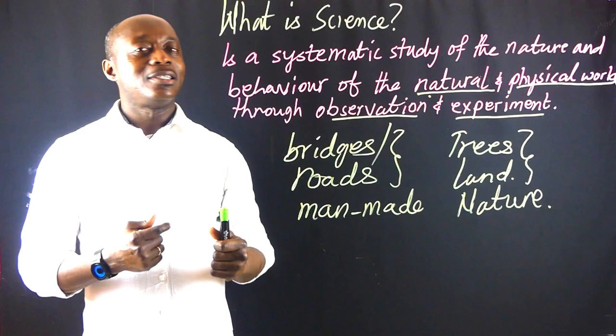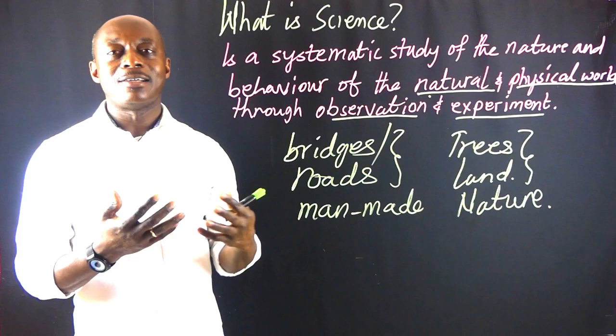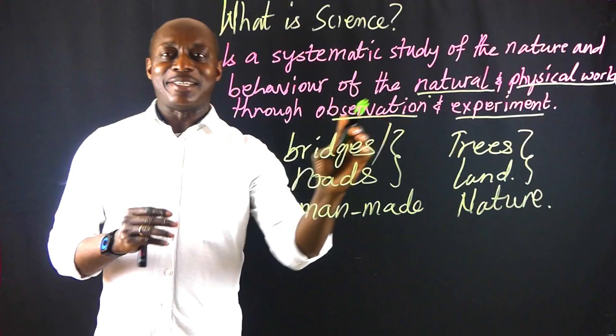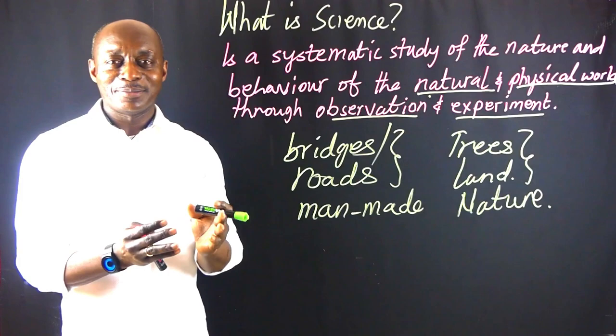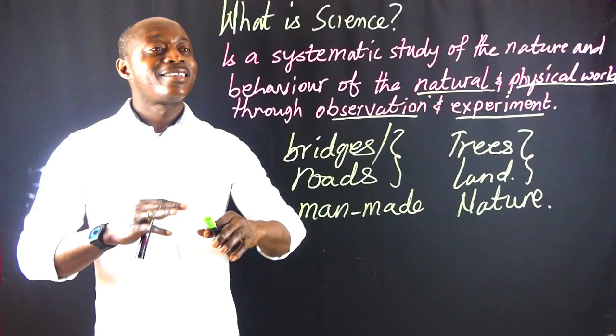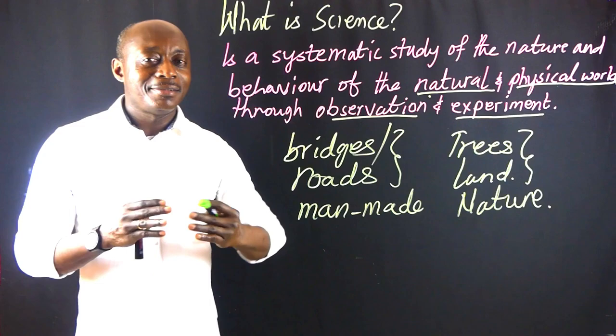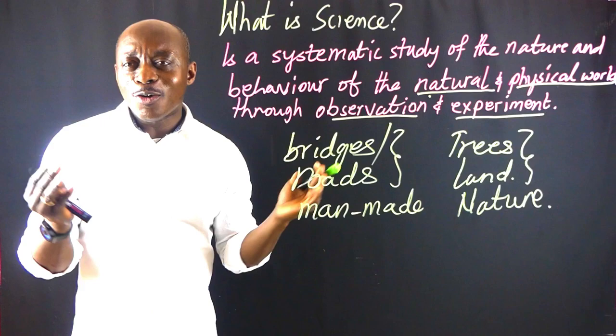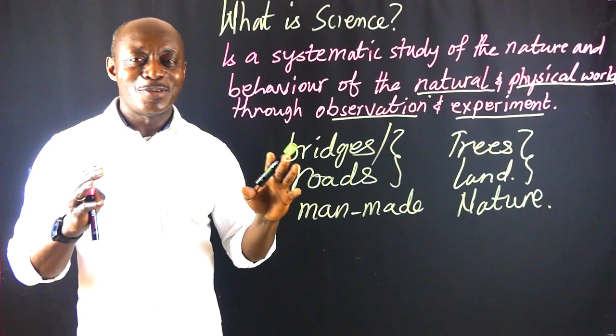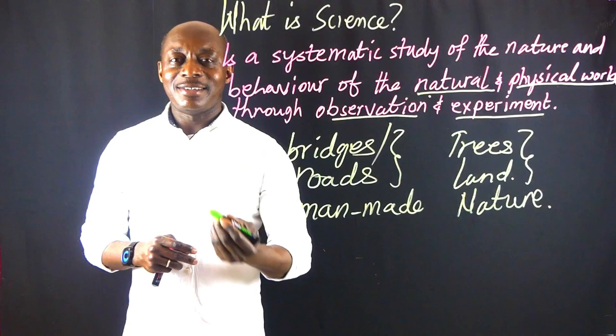Now, we know science is a systematic study of the natural and physical world. But the question is: can a person study all the things that we see around us — like the trees, the water bodies, the sea, the weather — all of them together at the same time? No. So in order to make things easier, aspects of science have been divided into what we call subjects — science subjects.